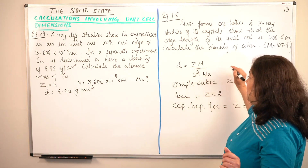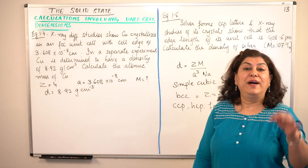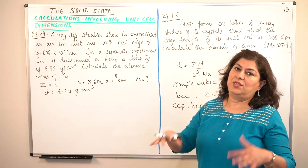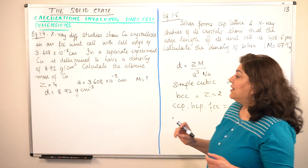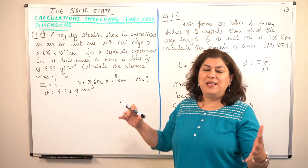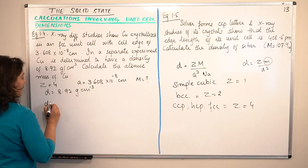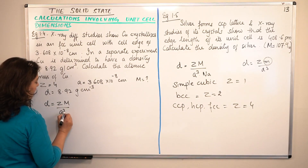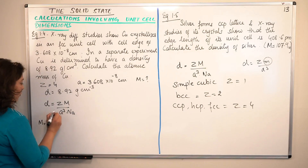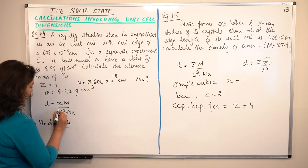If the problem asked for the mass of one atom, the relationship would be D = Zm/A³ where m is the mass of one atom. But it is asking for the molar mass — atomic mass means molar mass. So let us write down the equation: density D equals ZM over A cube Na. We are supposed to find M, so rearranging: M equals density into A cube into Na, upon Z.